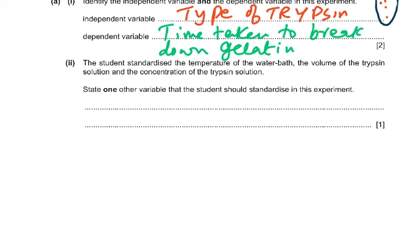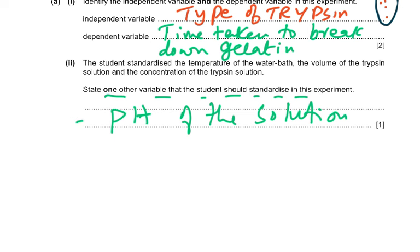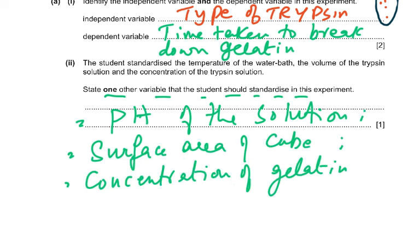The student standardized the temperature of the water bath, the volume of the trypsin solution, and the concentration of the trypsin solution. The question asks: state one other variable that the student should standardize. Since enzymes are affected by temperature and pH, you could state the pH of the solution. You could also state the surface area of the cube, the mass of the cube, the volume of the cube, or the concentration of gelatin or collagen in the cube. Valid answers include: pH of the solution, surface area of the cube, and concentration of the gelatin.